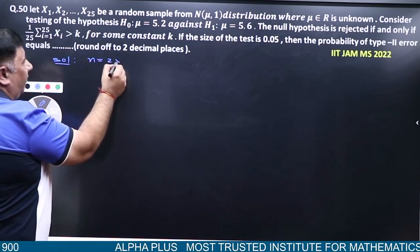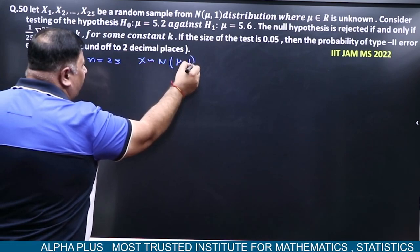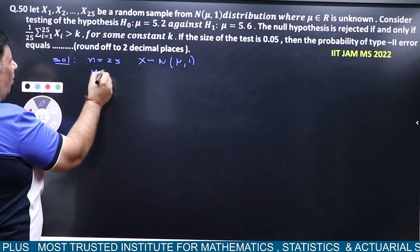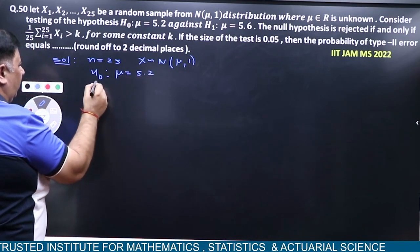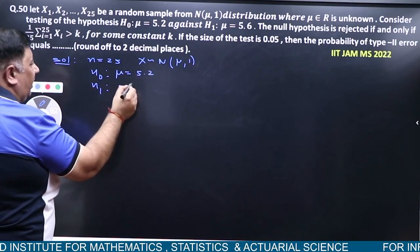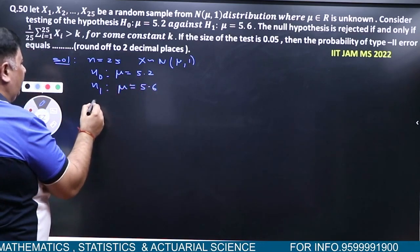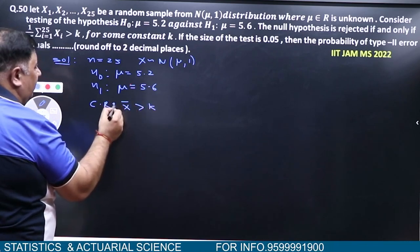n aapka 25 hai, X follows normal(μ, 1). Consider the hypothesis H₀: μ = 5.2. The critical region is X̄ greater than K.